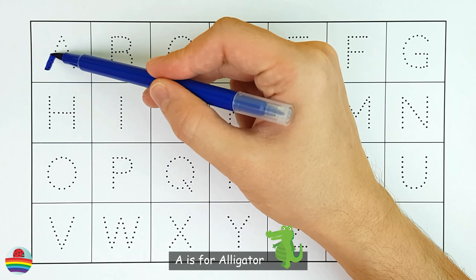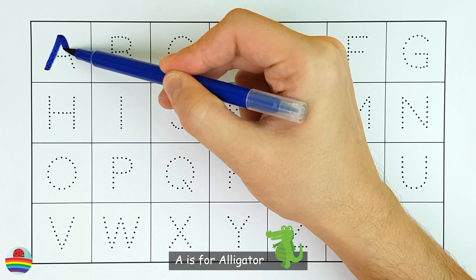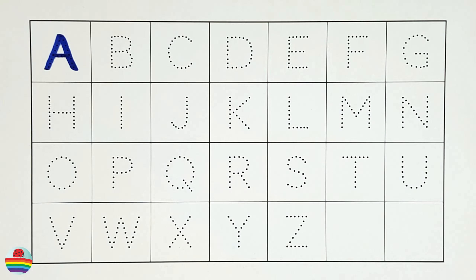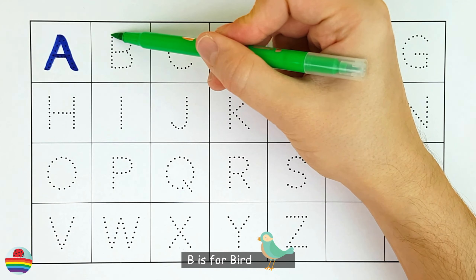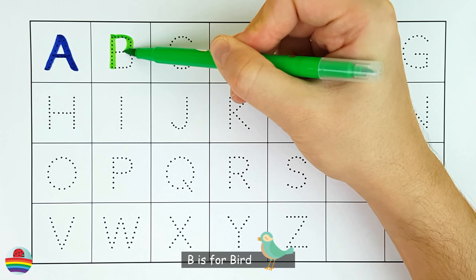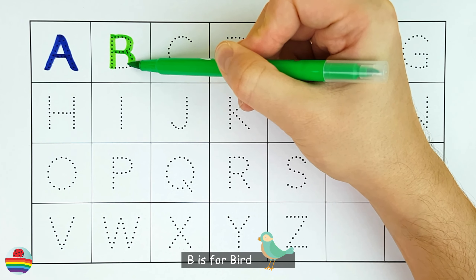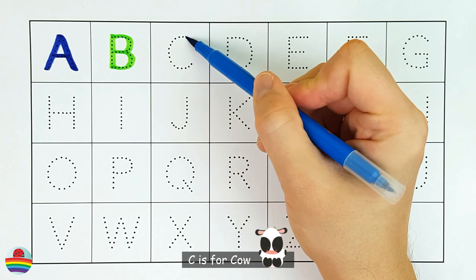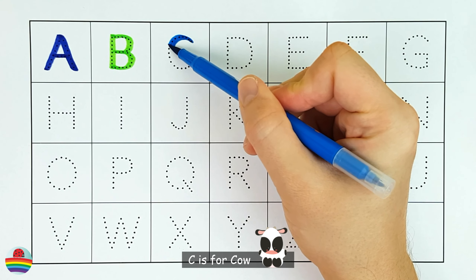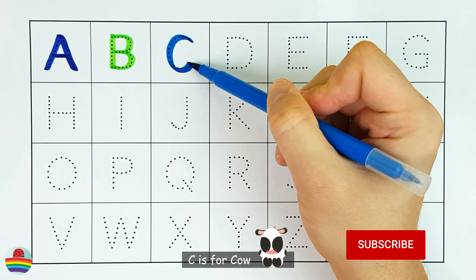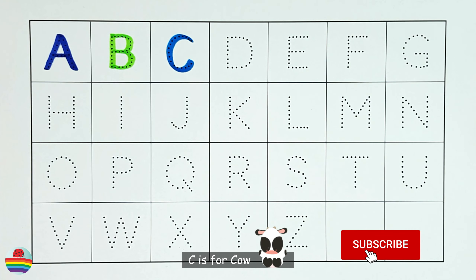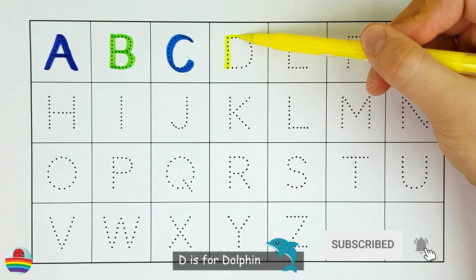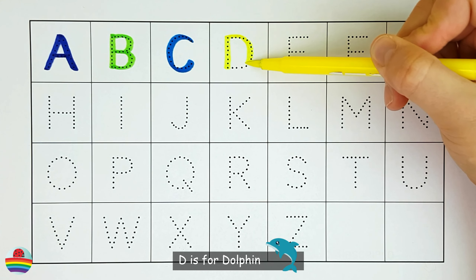A. A is for alligator. B. B is for bird. C. C is for cow. D. D is for dolphin.